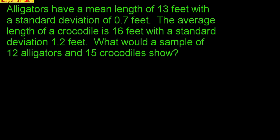A sampling distribution doesn't just show what one sample looks like — it shows what one sample looks like in comparison to a whole bunch of other samples just like it. For example, alligators have a mean length of 13 feet with a standard deviation of 0.7 feet, and the average length of a crocodile is 16 feet with a standard deviation of 1.2 feet. What would a sample of 12 alligators and 15 crocodiles show? We have two different populations — two different species.